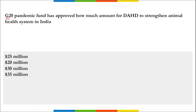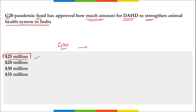The G20 Pandemic Fund has approved a $25 million proposal by DAHD to strengthen the animal health system in India. This comes under the Ministry of Fisheries, Animal Husbandry, and Dairying, and the funding is for animal health security and strengthening India's pandemic preparedness and response.